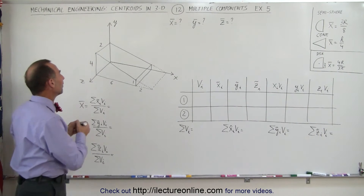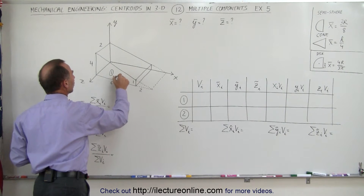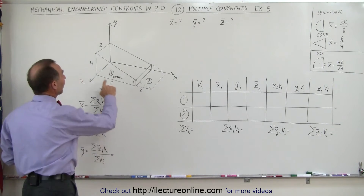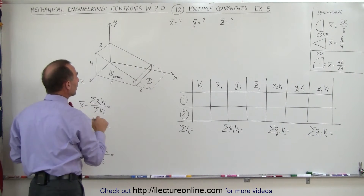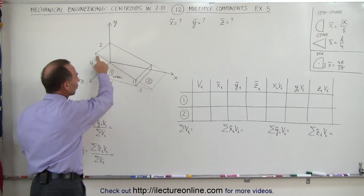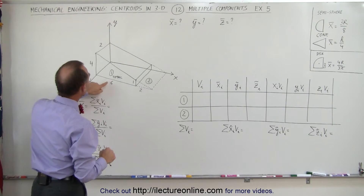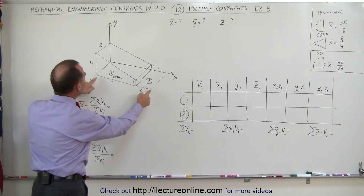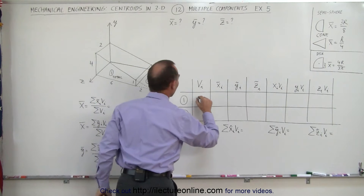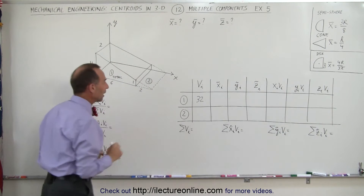First of all we need to identify the volumes. One will be the total wedge and two will be the missing part. To find the total volume of the wedge we take the length in this direction times the height divided by two, because we only need to take half of that, and we multiply it times the thickness. So that would be one-half times eight which is four, times four which is sixteen, times two which is thirty-two — that would be the volume of the total wedge.